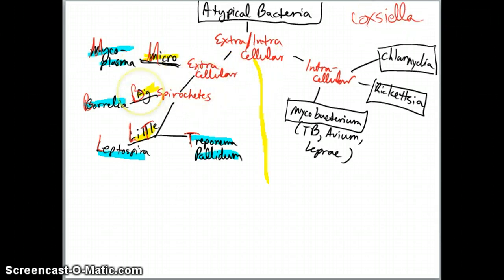Extracellular: Mycoplasma. The thing about Mycoplasma - it has a fried egg appearance, and the big thing is you're going to have the same symptoms of pneumonia. However, you will not have a productive cough. So you have someone that comes in, they're walking around fine, the x-ray looks horrible with infiltrates everywhere, they've got barely a low-grade fever and a nonproductive cough - start thinking Mycoplasma. They are cold agglutinin positive.